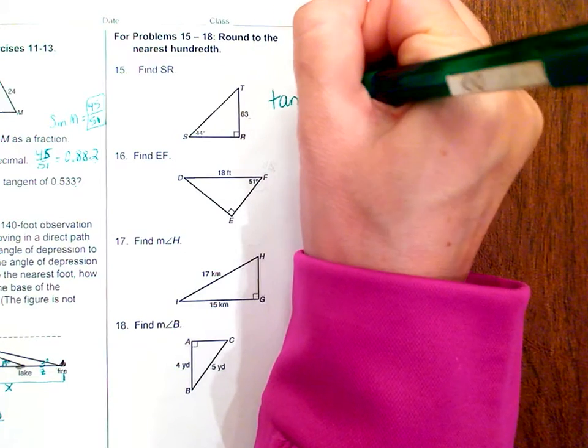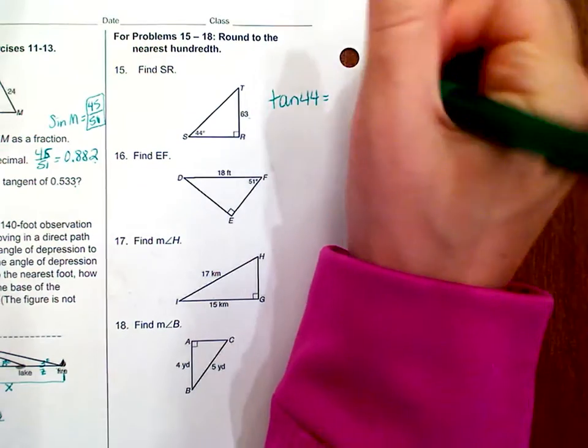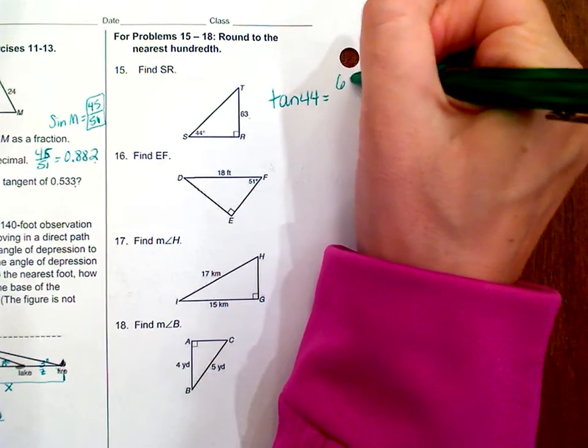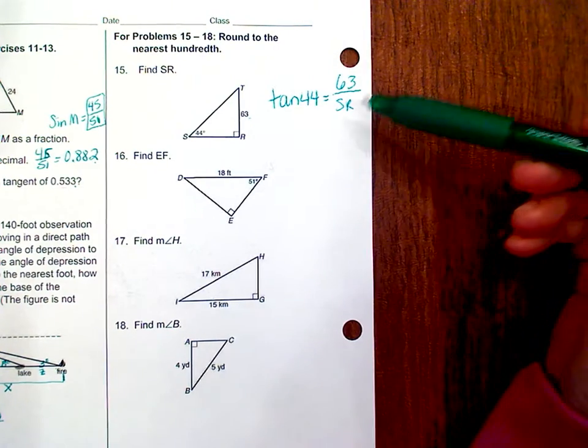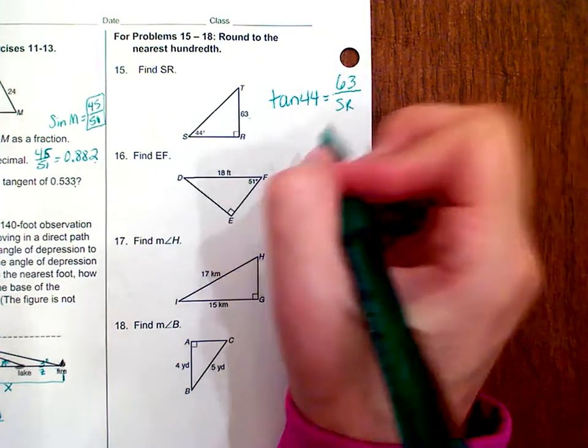So the tangent of 44 is equal to opposite, which is 63 over SR. Since this is in the denominator, we're going to divide those.